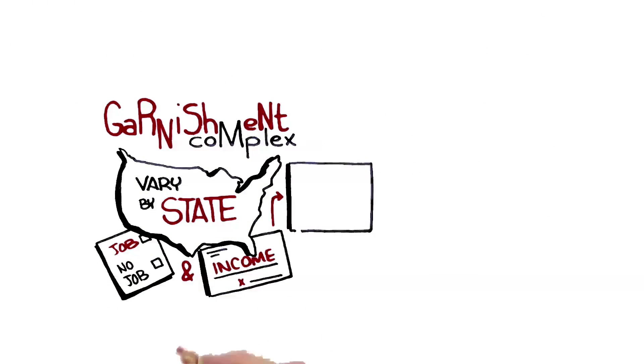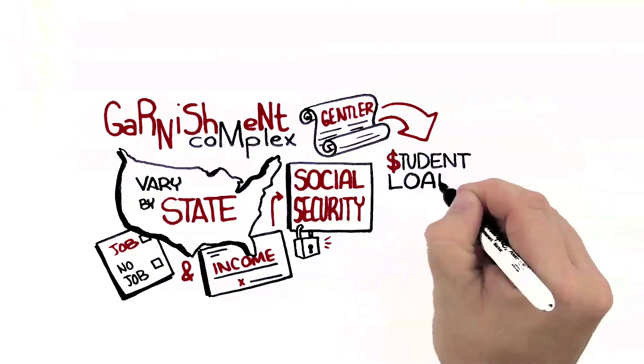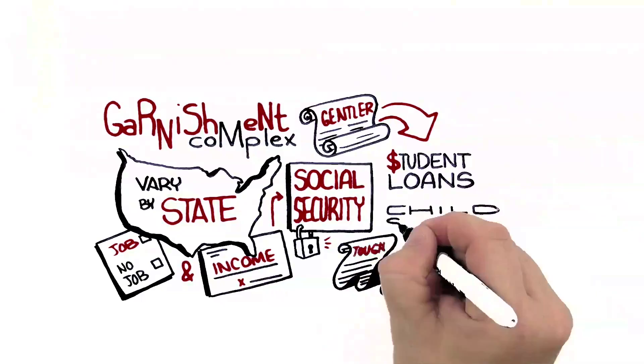Some types of income, such as Social Security, are protected from garnishment. The rules are gentler for some types of debt, such as student loans, and tougher for others, like child support. All very tricky.